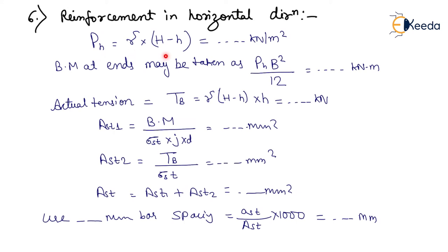pH equals gamma into (H minus h), in kilonewton per m². Bending moment at ends may be taken as pH into B² divided by 12, in kilonewton-meter. Actual tension due to the length of long wall: Tb equals gamma into (H minus h) into B, in kilonewtons. Calculate AST1 equals bending moment upon (sigma ST into J into D), in mm². AST2 equals Tb upon sigma ST, in mm². Total AST equals AST1 plus AST2, in mm².